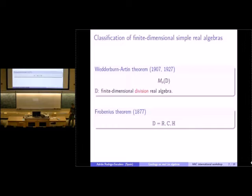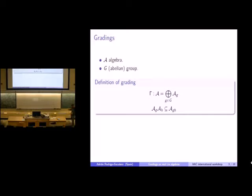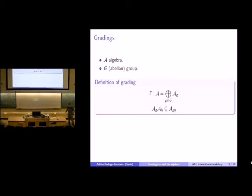Just to remember what a grading is: given an algebra and a group, a grading is a decomposition of the algebra that is compatible with the structure of vector space and of the product. That is, we have a vector space decomposition where every subspace is indexed by a degree g in the group, and we require that the product of a homogeneous element of degree g and one of degree h gives a homogeneous element of degree gh.